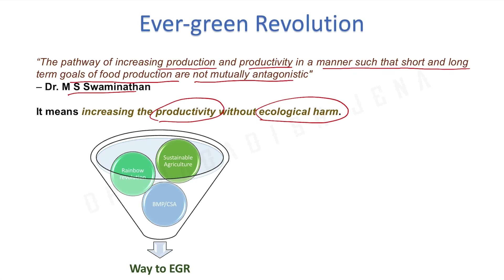As we started using more and more resources, the fertility status of the soil started depleting, and partial factor productivity started going down. There was a yield plateau, and right now the problem is yield stagnation, multi-nutrient deficiency, and different disease and pest infestations. These are the major drawbacks of the Green Revolution era.